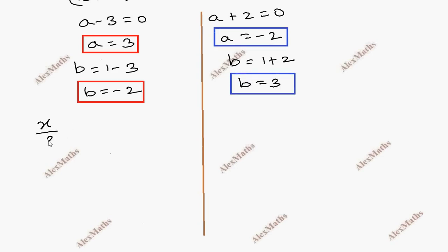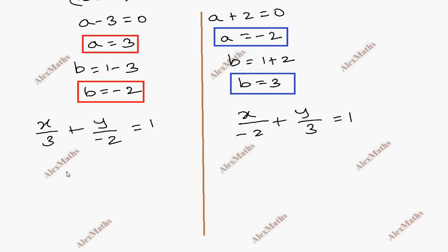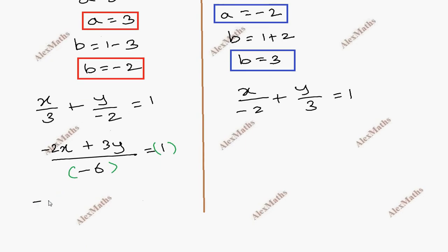Applying the formula x by a plus y by b equal to 1 with a equal to minus 2 and b equal to 3: after cross multiplication, we get 2x plus 3y equal to minus 6, giving the first equation: 2x minus 3y minus 6 equal to 0.